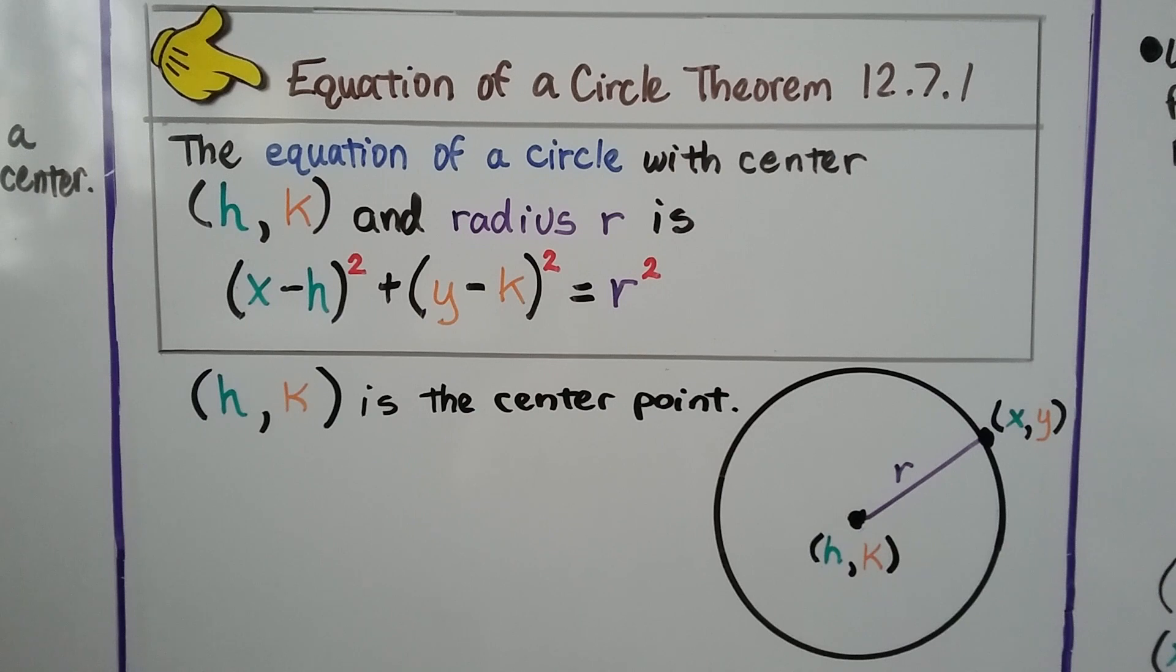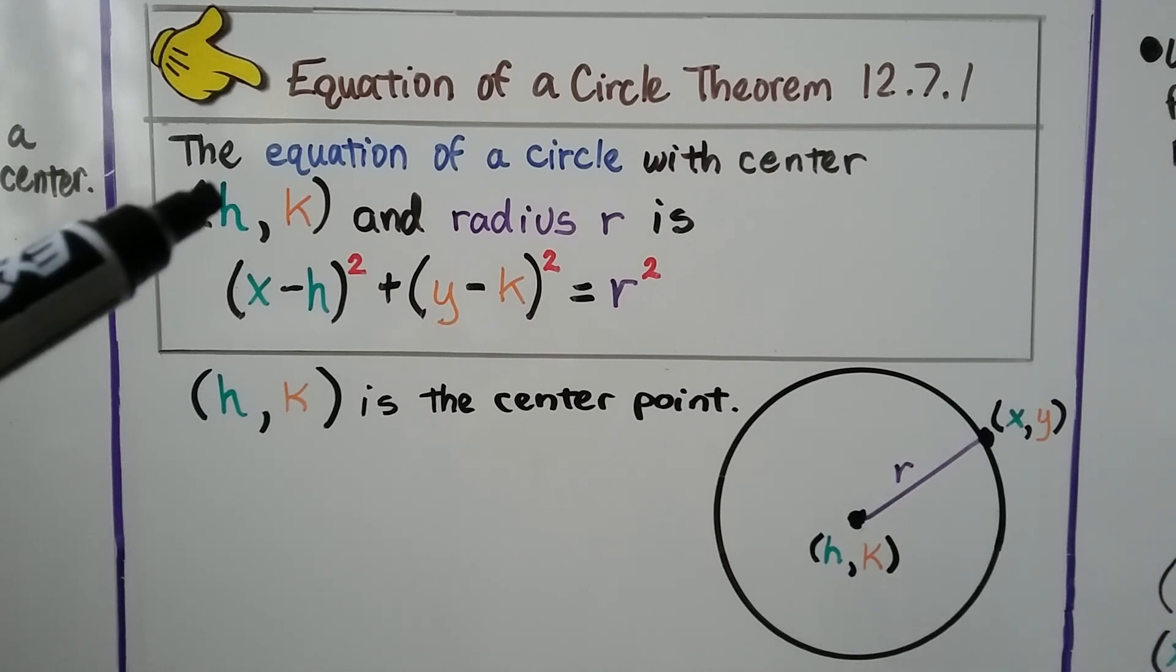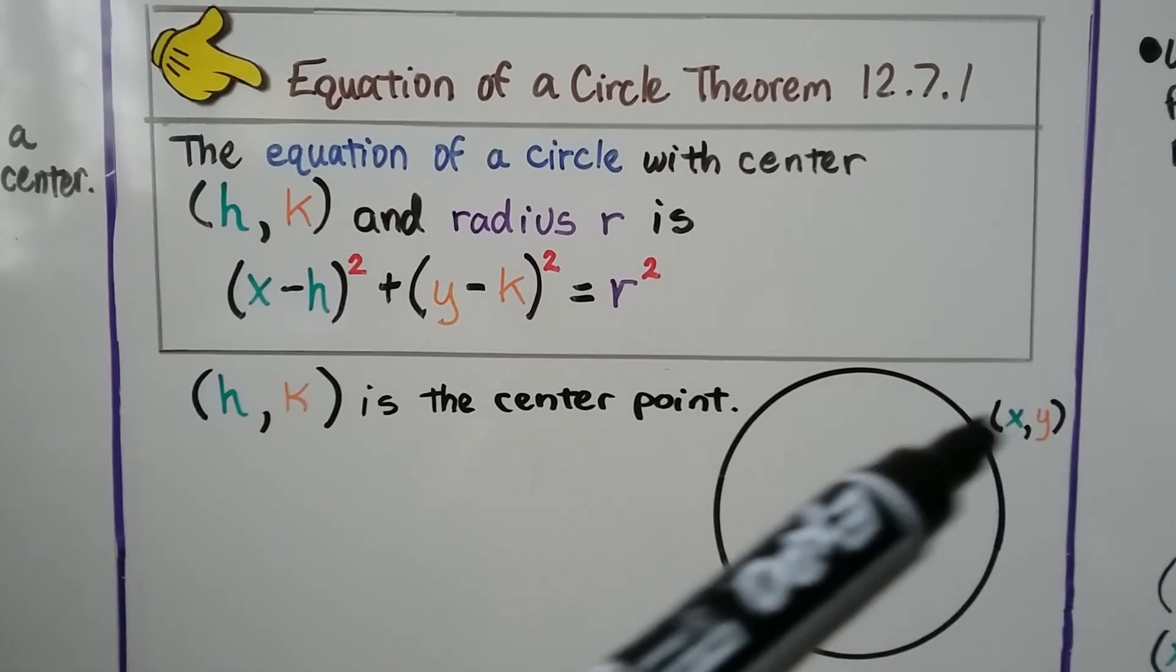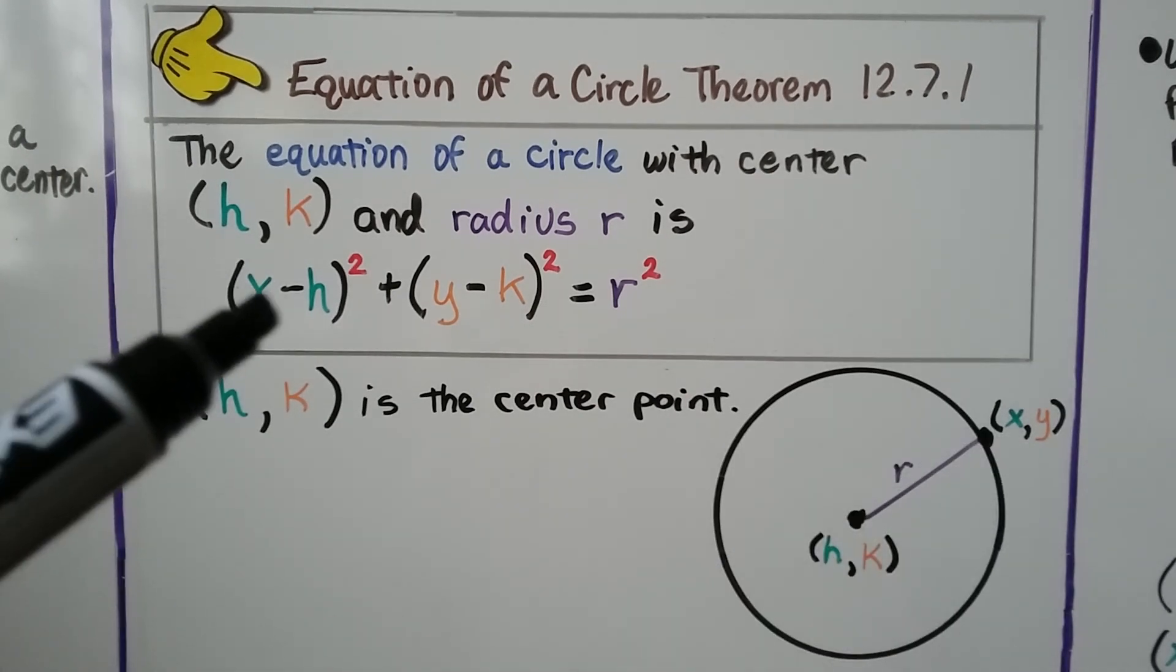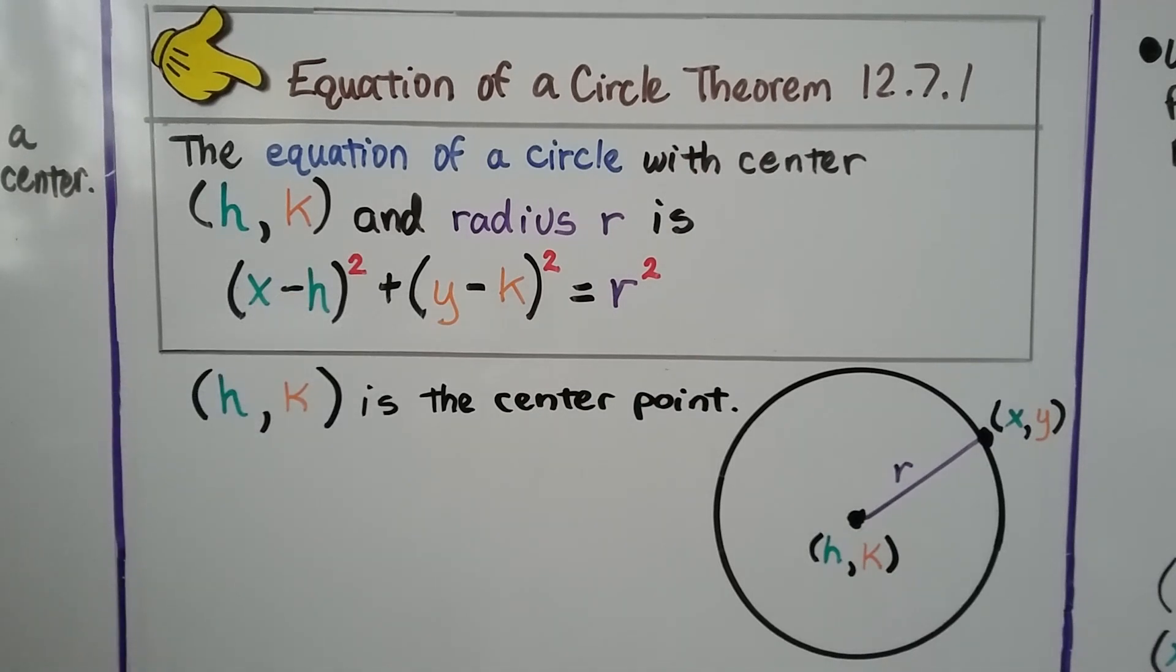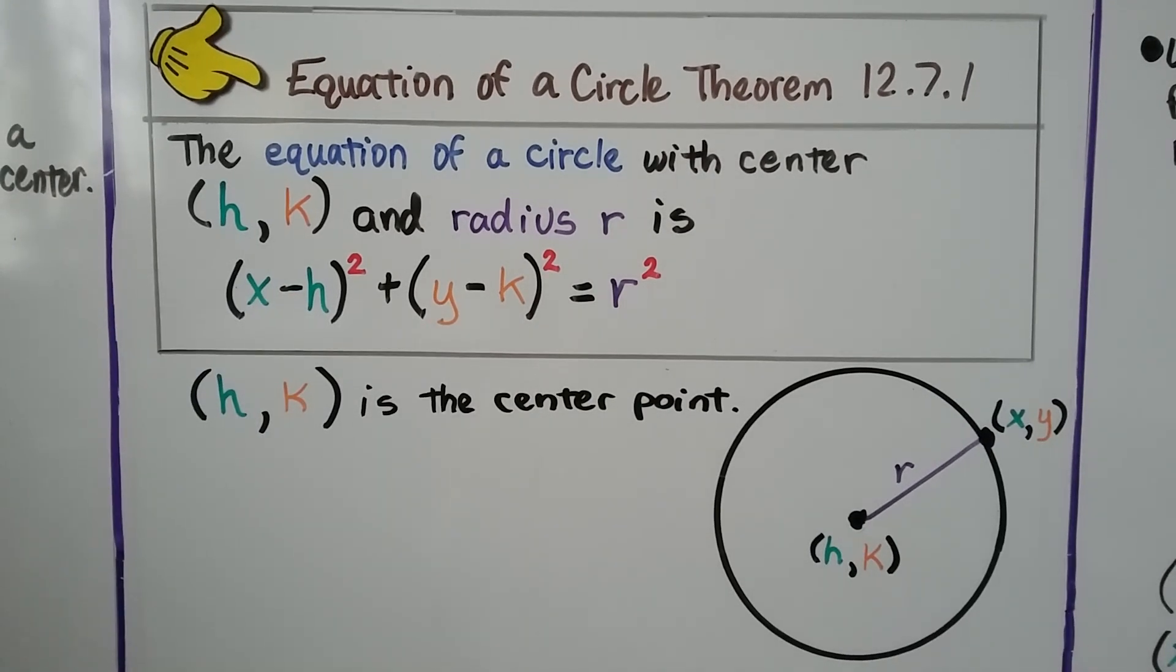So for your notes, the equation of a circle theorem, 12.7.1, says the equation of a circle with center hk and radius r is x minus h squared plus y minus k squared equals r squared. So that hk is the center point.